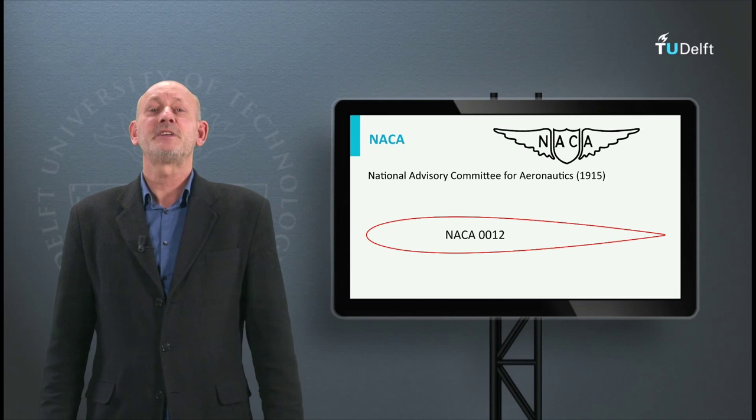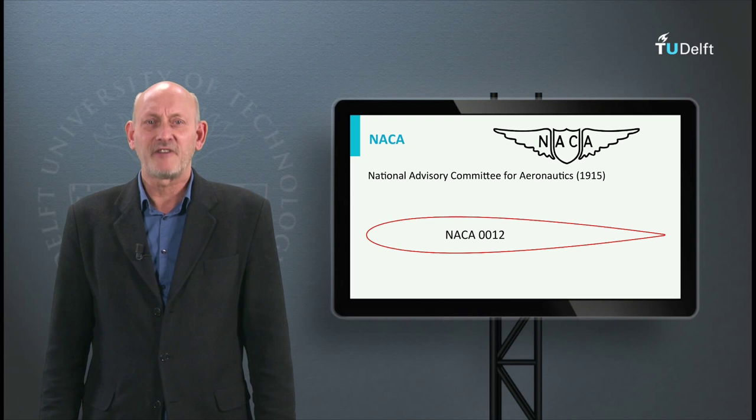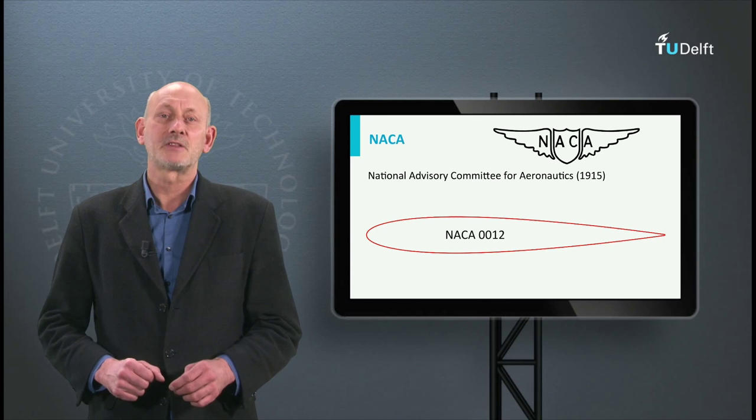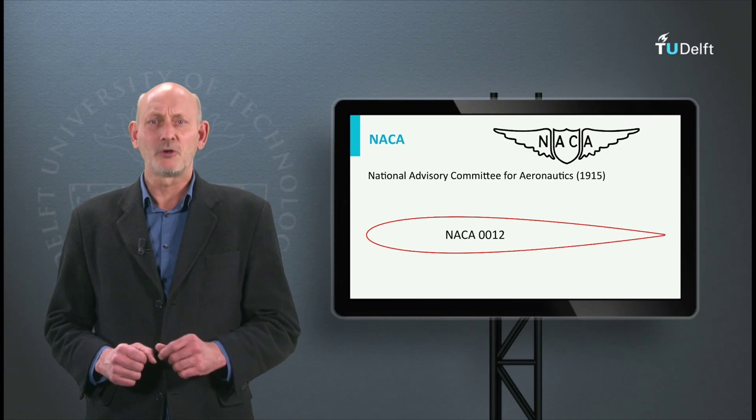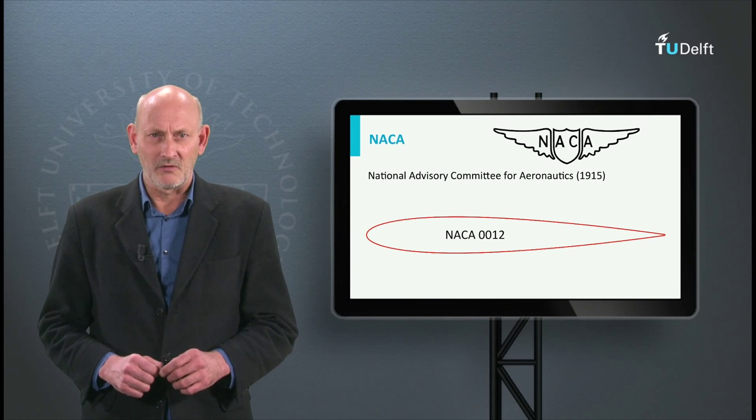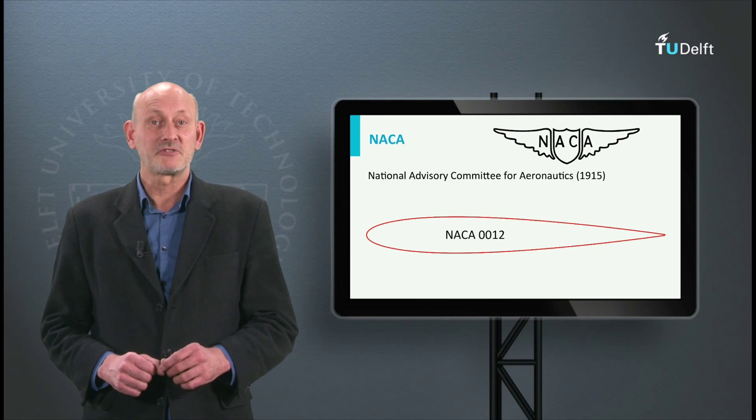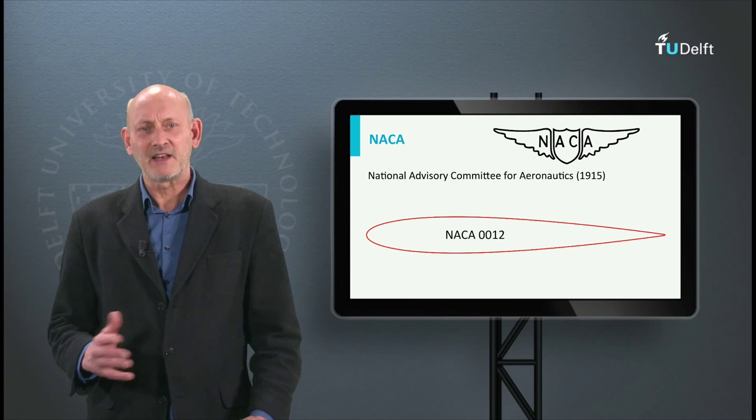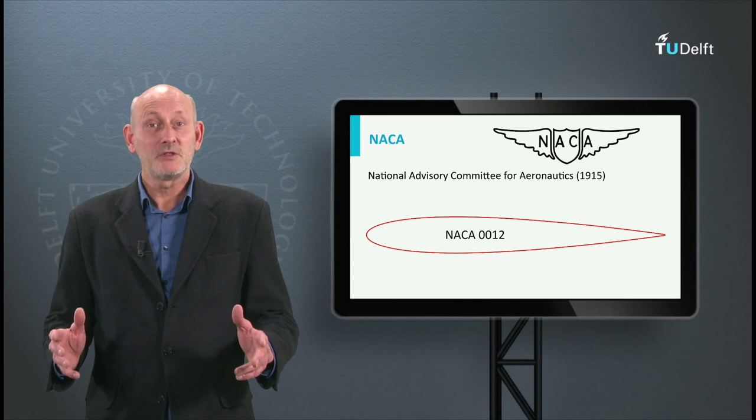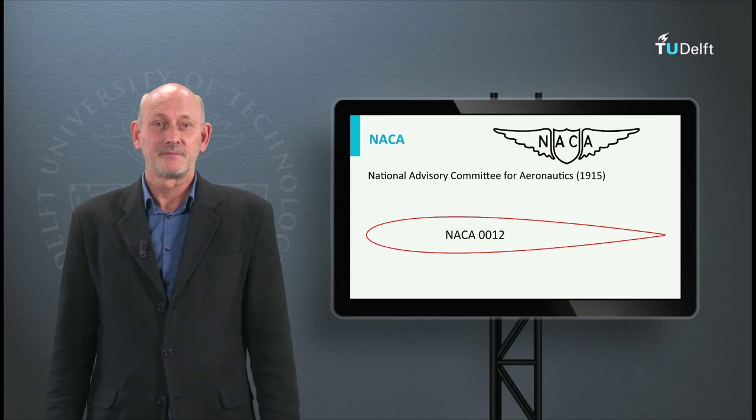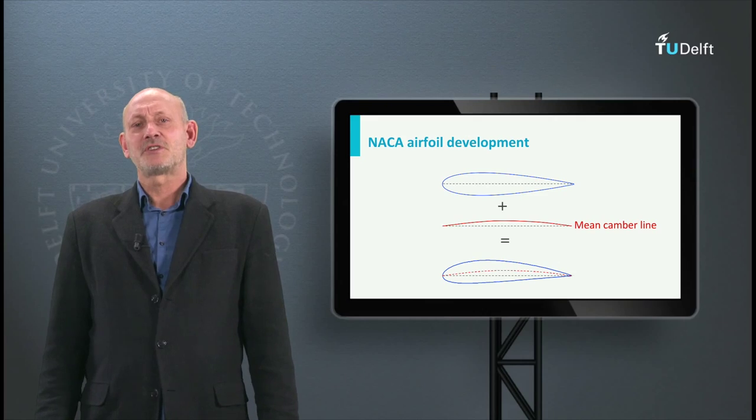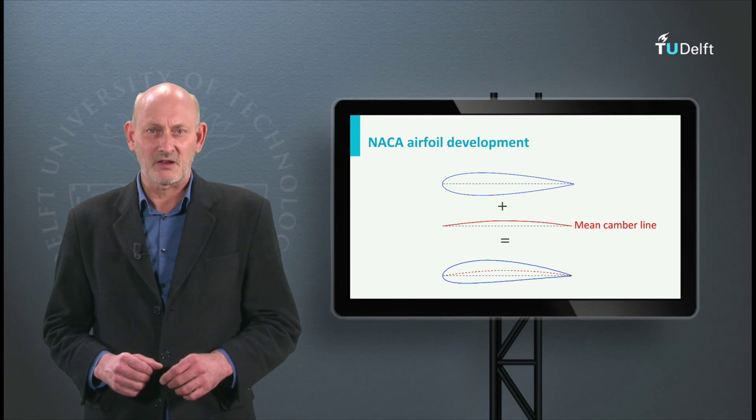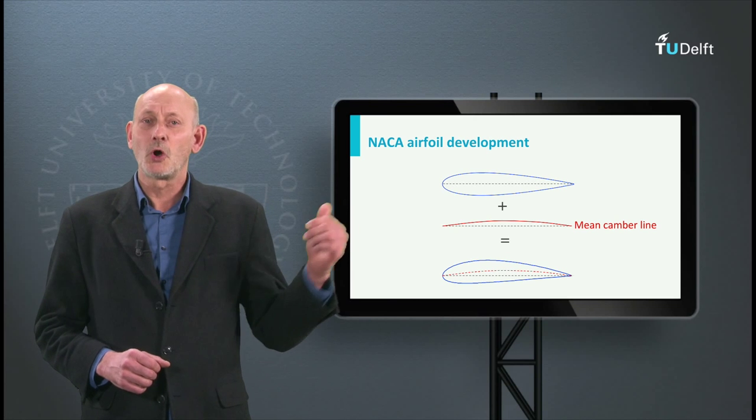In the 1930s the NACA 4-digit and 5-digit airfoil series were developed, such as NACA 4415 and NACA 23015. Also the NACA 0012, a 12% thick symmetrical airfoil saw the light. It was later on mostly used for helicopters and it is probably the most tested airfoil in the world.